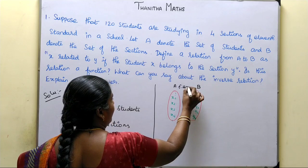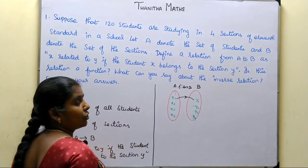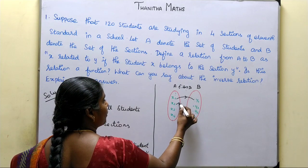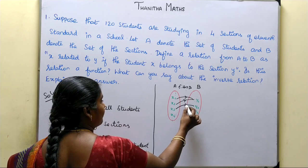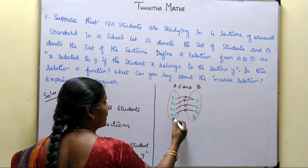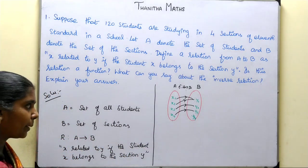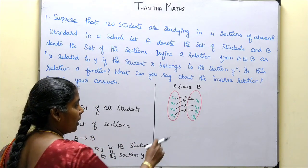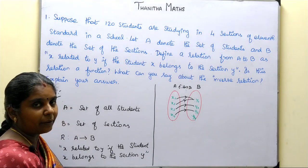F is a relation from A to B. Now, x1 maps to y1, x2 maps to y1, x3 maps to y2, x4 maps to y2. Total students are 120. There is one image for each domain element, but two domain elements can share one image.